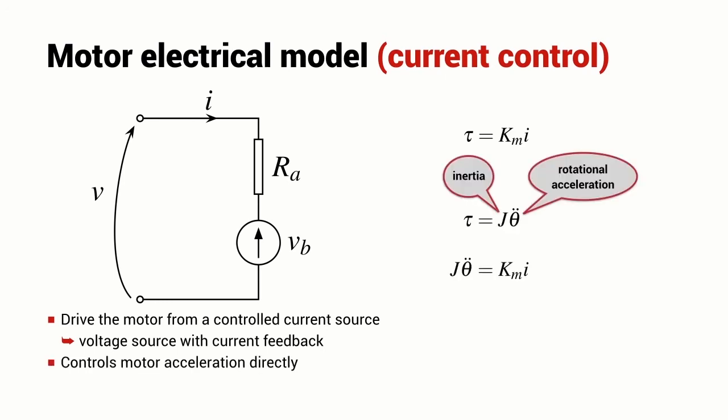The torque is also equal to the rotational inertia of the motor multiplied by its rotational acceleration. This is the rotational equivalent of the equation F equals MA. Now we can write an expression for the rotational acceleration of the motor in terms of the current flowing into the motor.